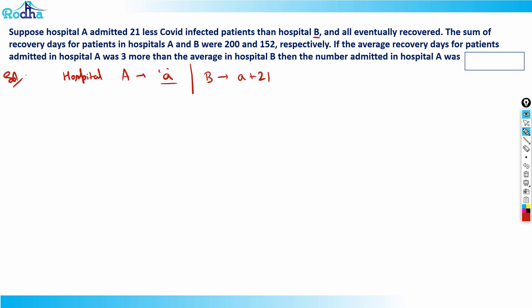The sum of recovery days for patients in hospital A and B are 200 and 152 respectively. The average recovery days for patients admitted in hospital A was three more than the average in hospital B — so the difference between average recovery days of A and B is three. If the sum of recovery days for hospital A is 200 and there are A COVID patients, the average recovery will be 200 divided by A.